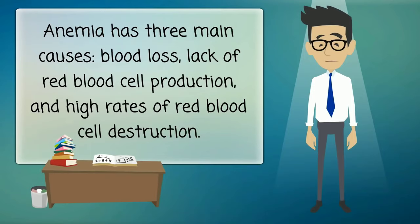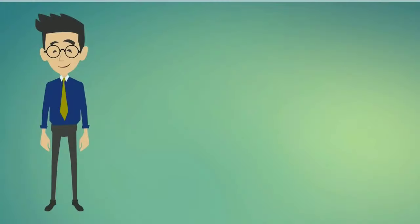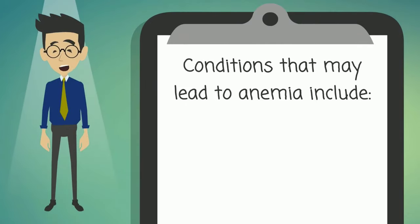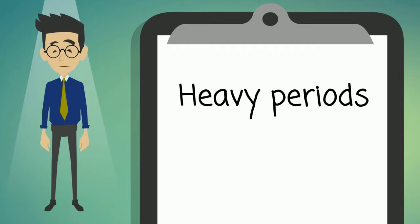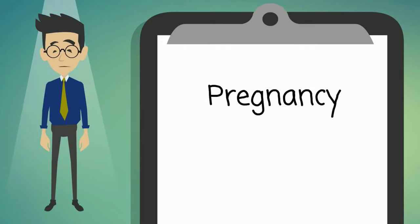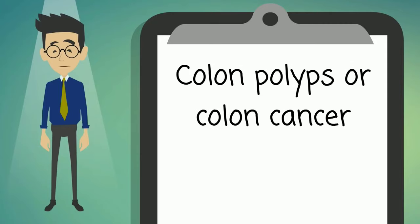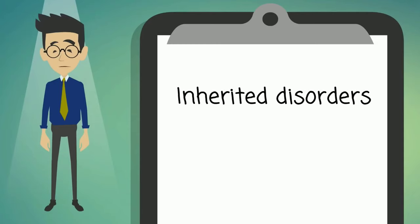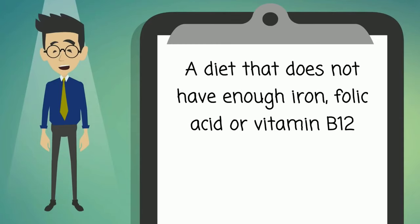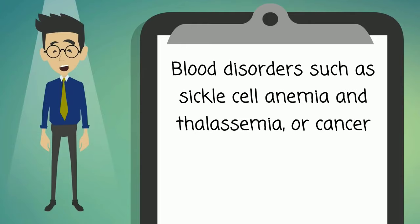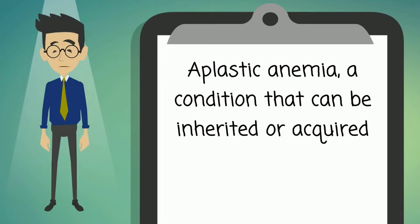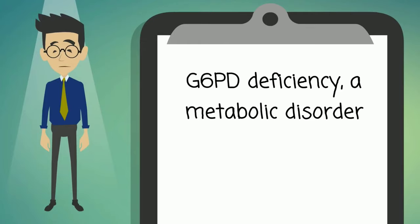Anemia has three main causes: blood loss, lack of red blood cell production, and high rates of red blood cell destruction. Conditions that may lead to anemia include heavy periods, pregnancy, ulcers, colon polyps or colon cancer, inherited disorders, a diet lacking enough iron, folic acid, or vitamin B12, blood disorders such as sickle cell anemia and thalassemia, cancer, aplastic anemia, and G6PD deficiency — a metabolic disorder.